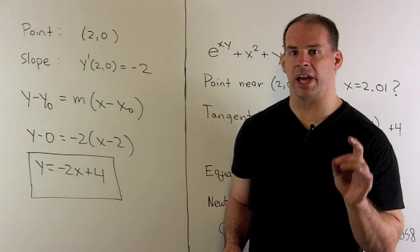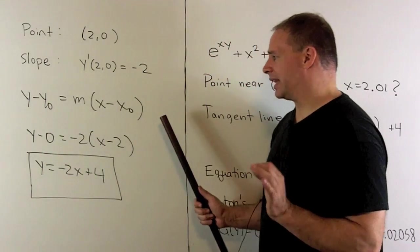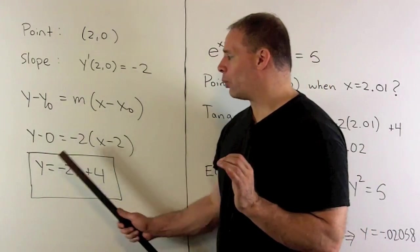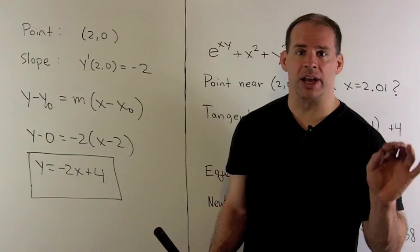For the equation of our tangent line, we have our point, we have our slope, we have the equation of a line. Put everything together, I get y = -2x + 4. So that's our answer.